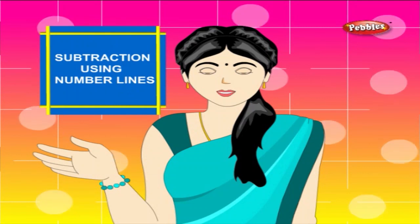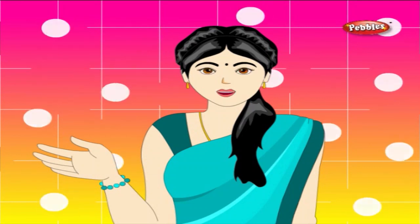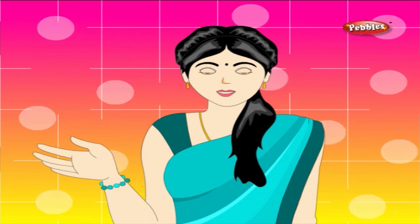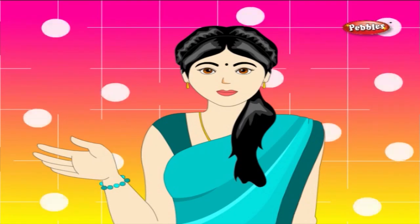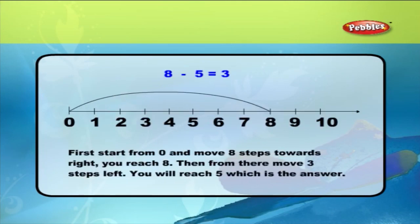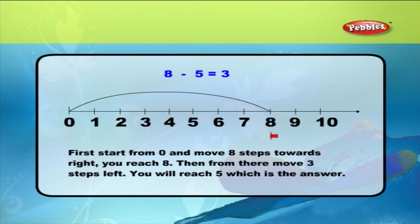Subtraction using number lines. Another way of finding the answer for a subtraction is by using number lines. For example, if you want to minus 5 from 8, that is 8 minus 5 is equal to 3. First, start from 0 and move 8 steps towards the right. You reach 8. Then, from there, move 5 steps left. You will reach 3, which is the answer.